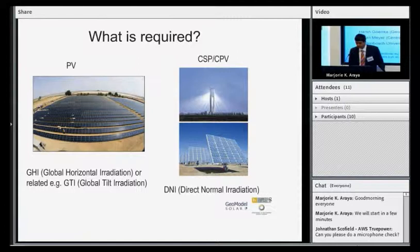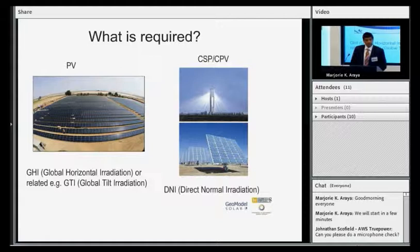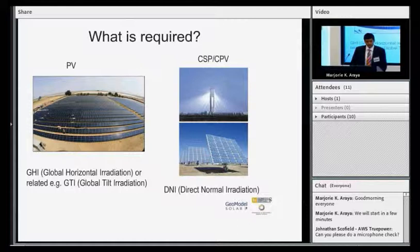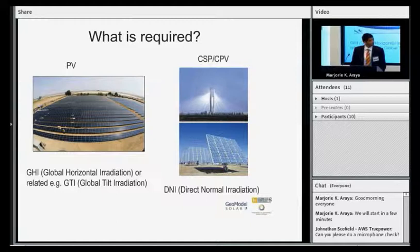Just to brush over the basics, there are two main solar power technologies that we look at: photovoltaic and concentrated solar power, and CPV as well. The solar resource parameter, when we're looking at PV or photovoltaic, the most relevant solar resource parameter is global horizontal radiation. When we're talking about CPV or CSP, the solar resource parameter that we're concerned with is direct normal irradiation.